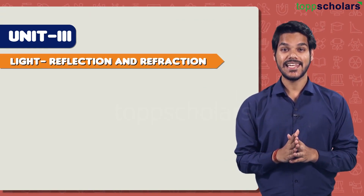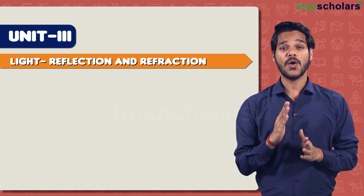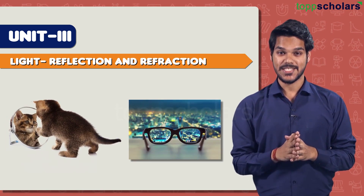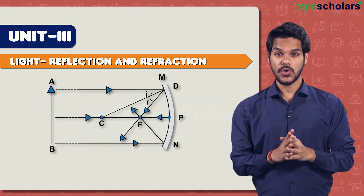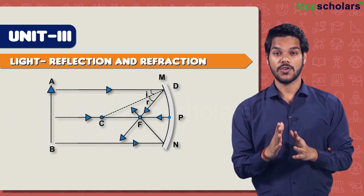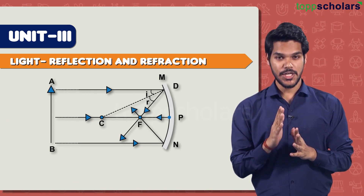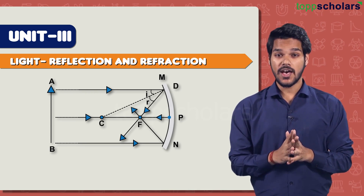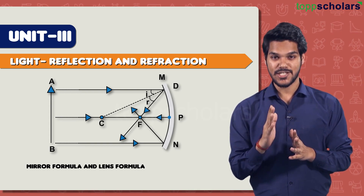Unit 3 starts with Light: Reflection and Refraction. This chapter is all about how light behaves in the presence of mirrors and lenses, so you are expected to draw ray diagrams. You can expect questions based on concave and convex mirrors as well as lenses, and questions asking you to describe the nature of the image formed. This chapter also has numericals, so expect questions based on the mirror formula and lens formula.